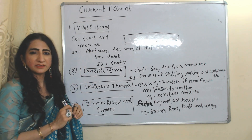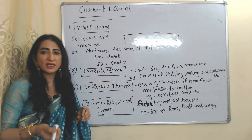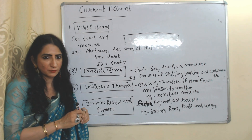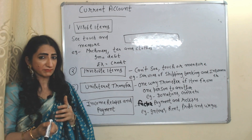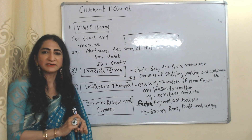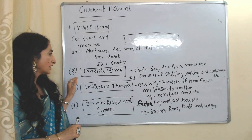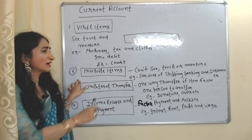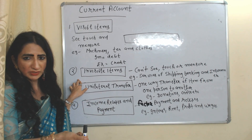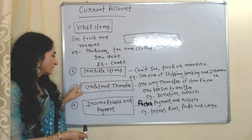Visible items are all commodities which we can see, touch, and measure — for example, machinery, tea, cloth, etc. Import of visible items will be debited in the Balance of Payment account because our money is going to another country, but export of visible items will be credited. Invisible items are those which we can't see, touch, or measure — for example, services of shipping, banking, and insurance. Import of invisible items will be debited and export of invisible items will be credited.